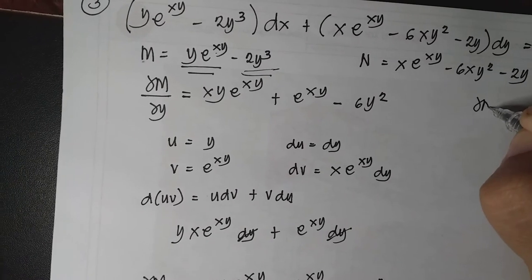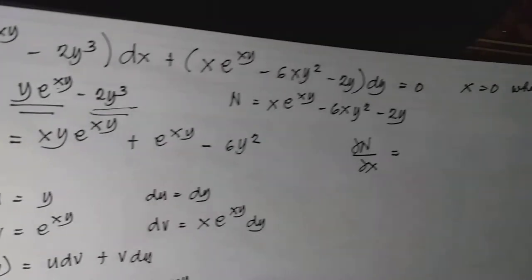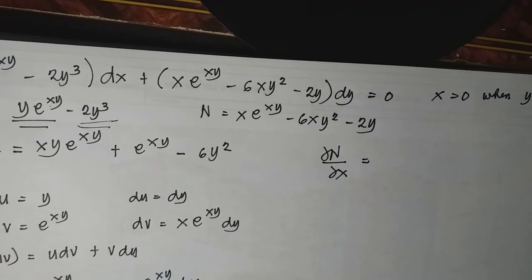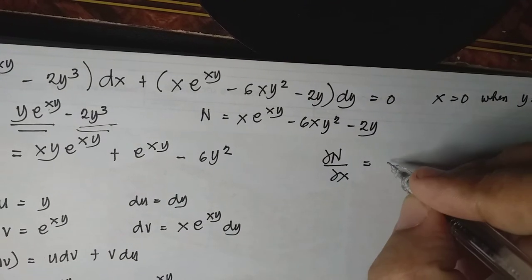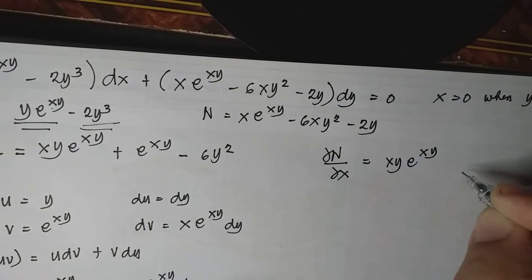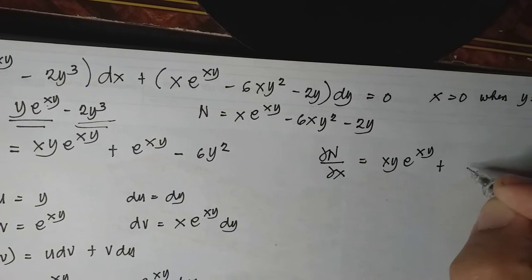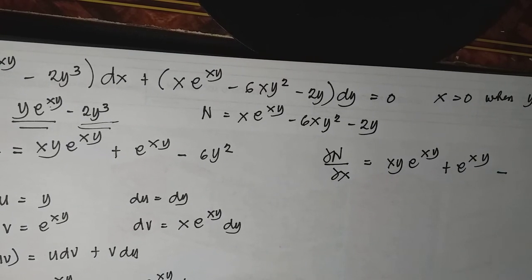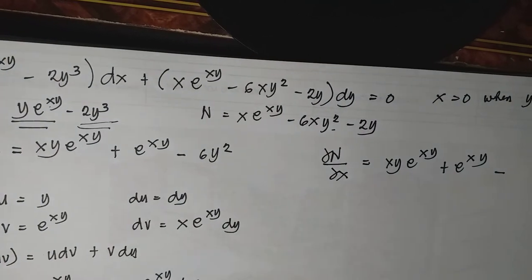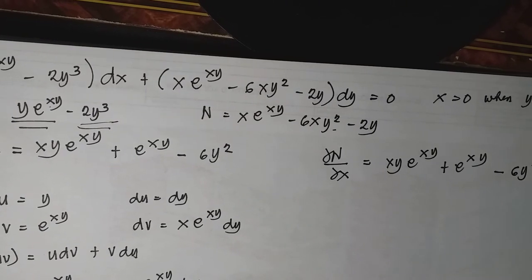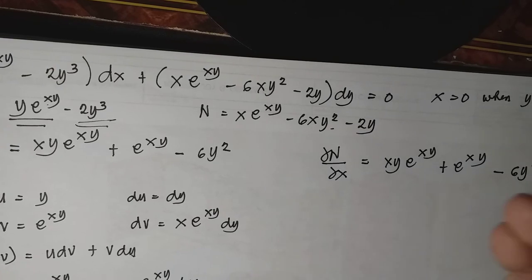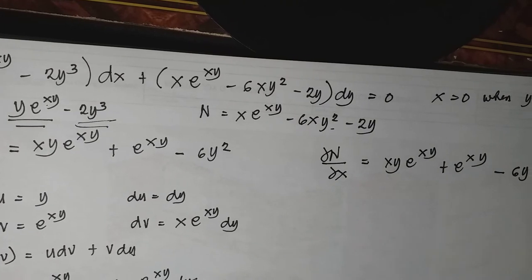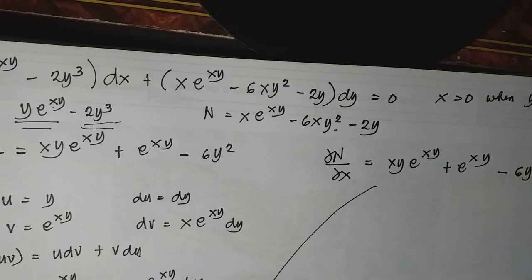Now differentiate N in terms of X holding Y constant. The first term xe^(xy) differentiates similarly: by product rule this gives xye^(xy) plus e^(xy). Differentiating negative 6xy² in terms of X gives negative 6y². The derivative of negative 2y is zero since Y is constant. So the derivative of N in terms of X equals xye^(xy) plus e^(xy) minus 6y², confirming an exact differential equation.